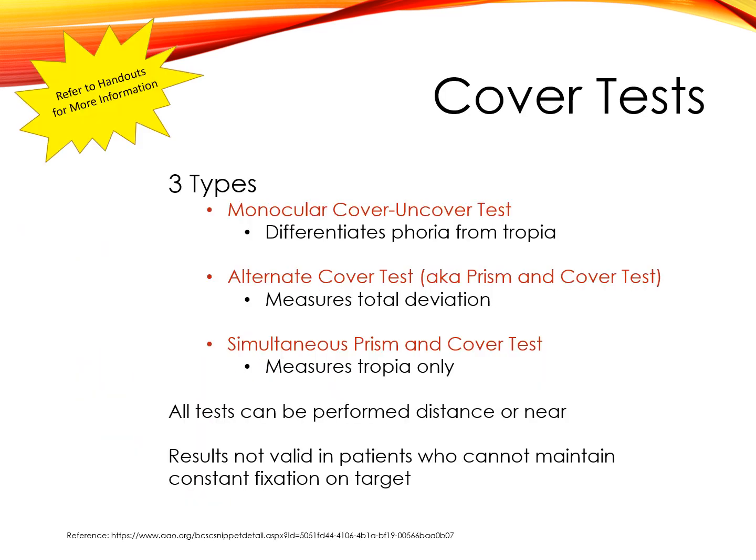There are three types of cover tests: the cover-uncover test, the alternate cover test, and the simultaneous prism and cover test. All can be performed with fixation at distance or near. The cover-uncover test is the most important test for detecting the presence of strabismus and for differentiating a phoria from a tropia. The alternate cover test measures the total deviation, regardless of whether it's latent or manifest. The simultaneous prism and cover test is helpful in determining the actual tropia when both eyes are uncovered.